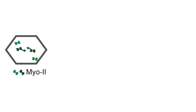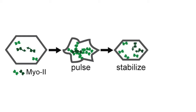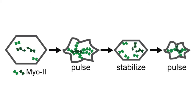The apical area will decrease in size as a coalescence of myosin appears in the medial domain, and then the apical area is stabilised as the myosin is remodelled, and then the cycle repeats. That's how you get the stepwise constriction of the cell.